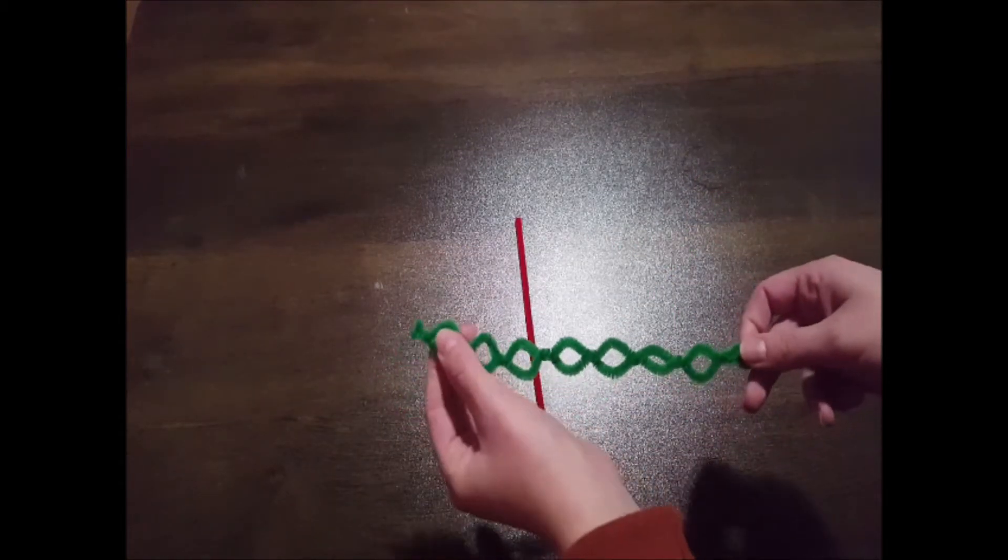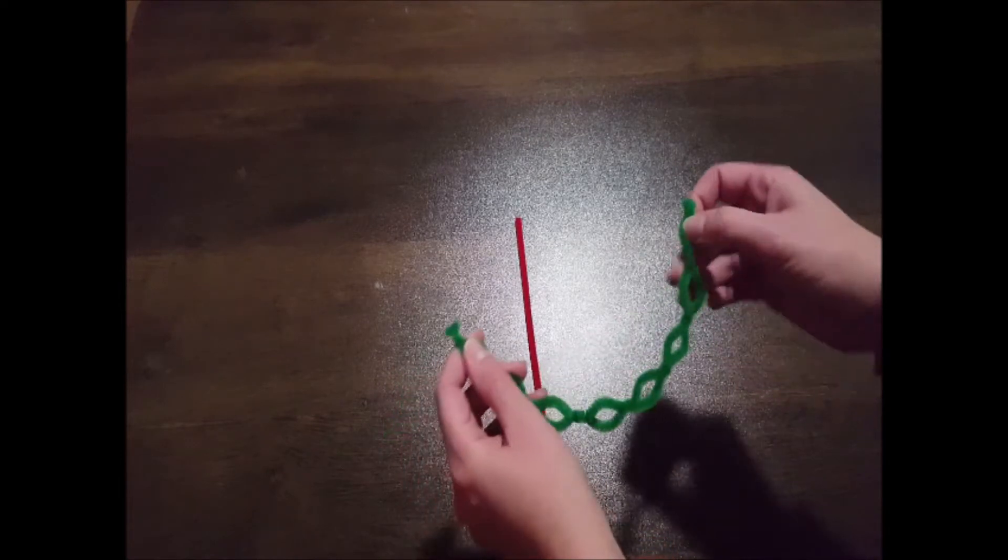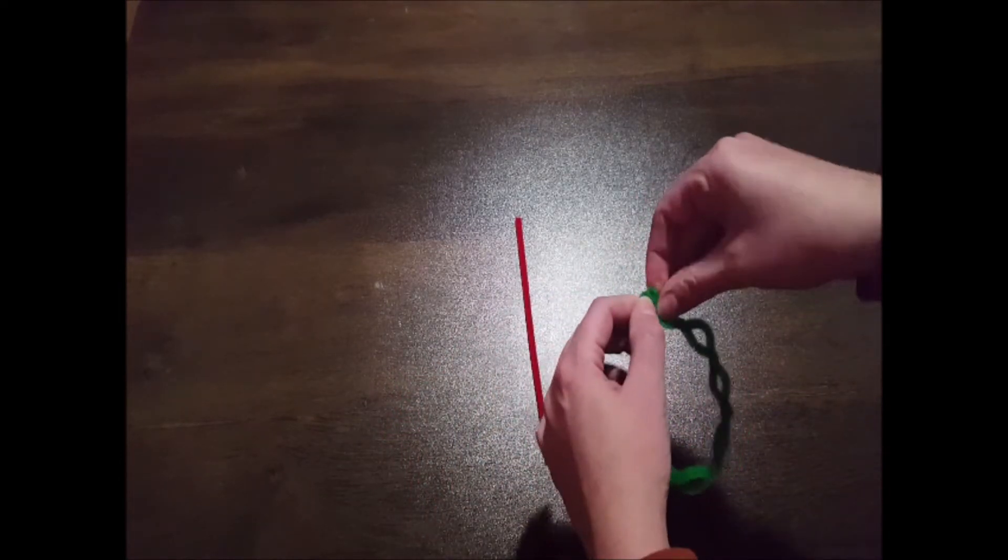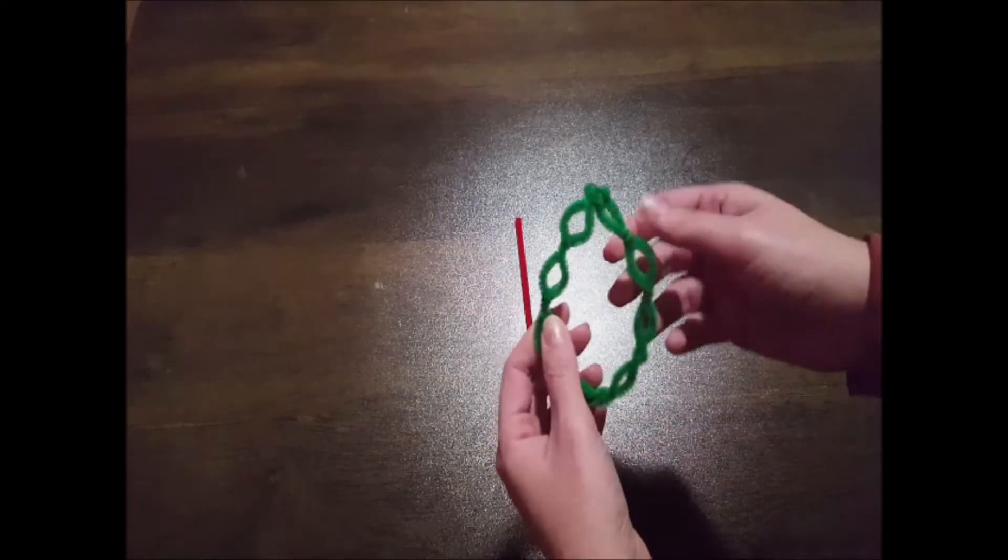Once you're finished making your loops, go ahead and straighten it out so that all the loops are facing the same direction. And bend the ends of your pipe cleaners together and twist them so that they hold. You should have now a circle shape.